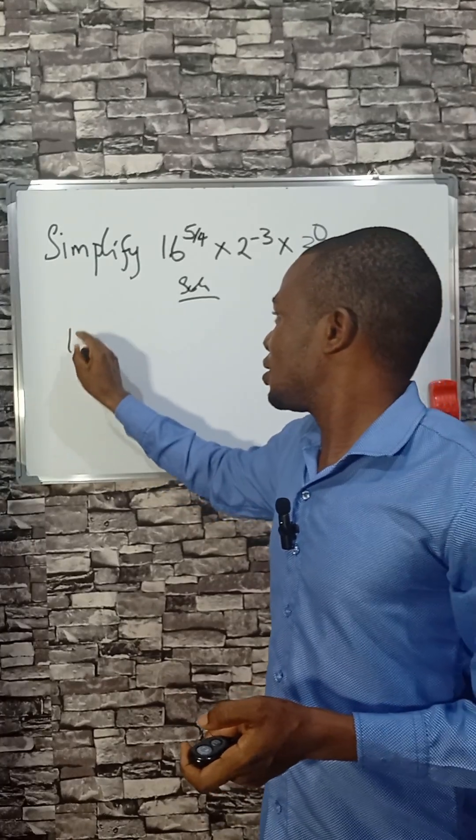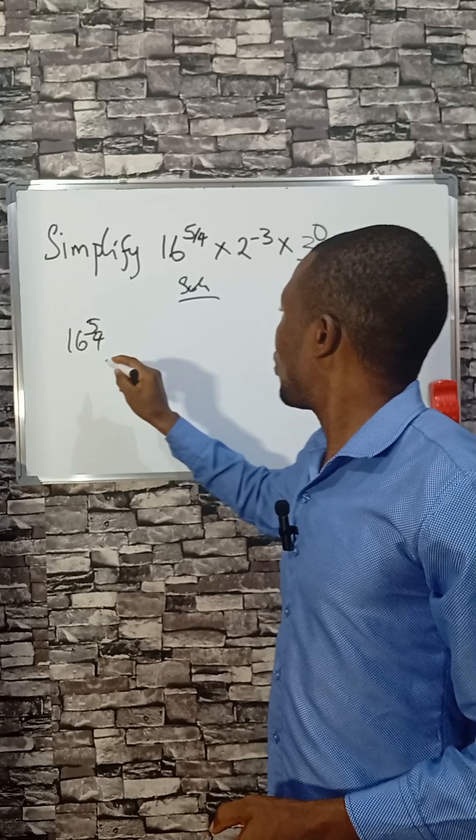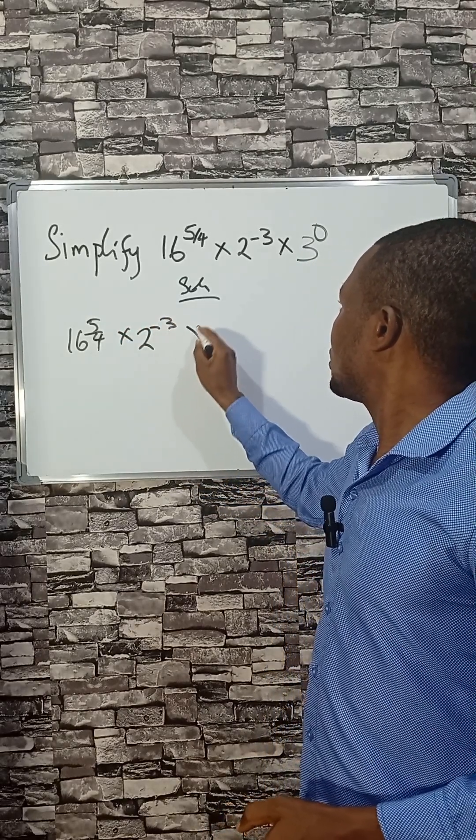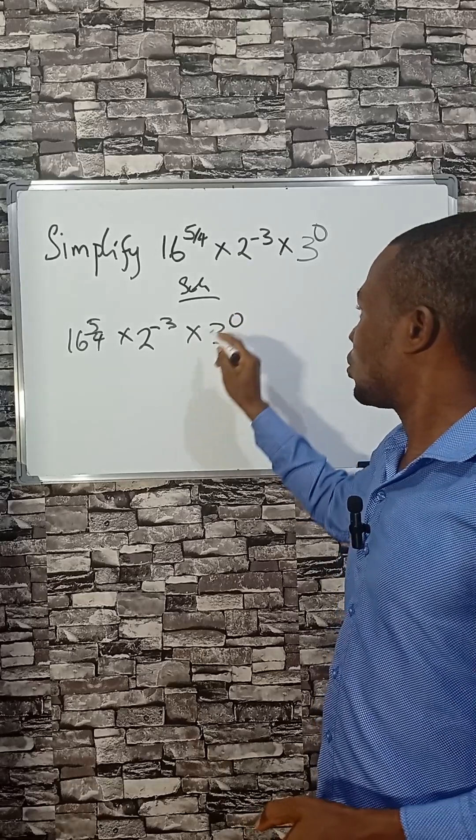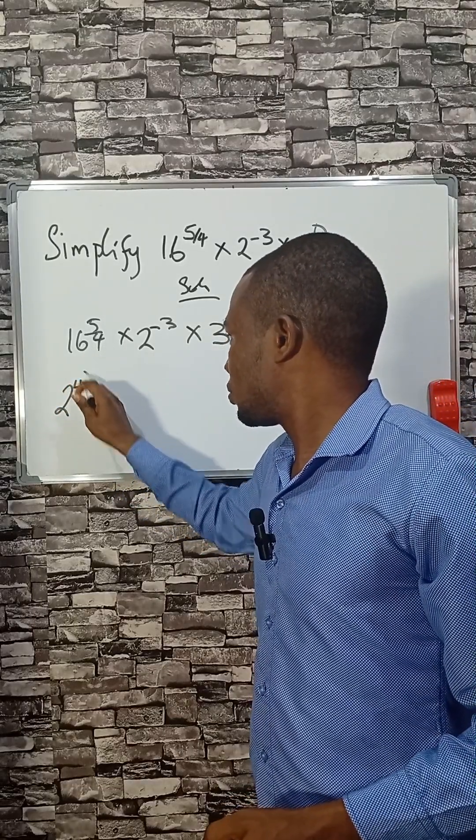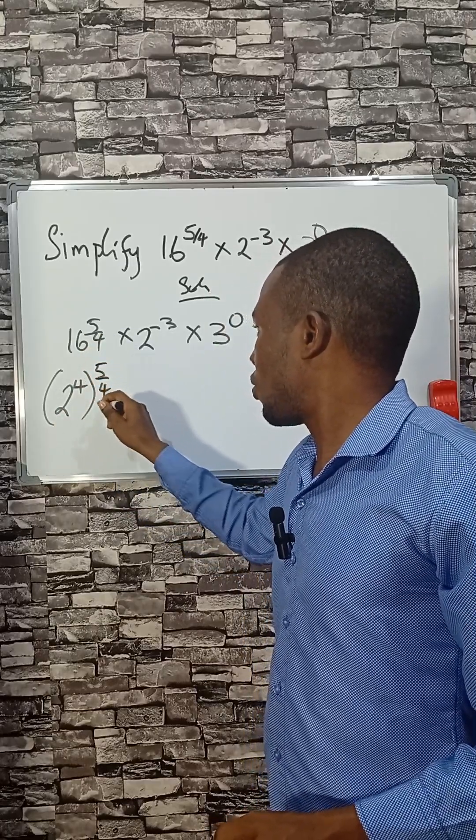Solution: 16 raised to the power 5 divided by 4, times 2 raised to the power minus 3, times 3 raised to the power of 0. We can write 16 as 2 raised to the power of 4, then times 5 over 4.